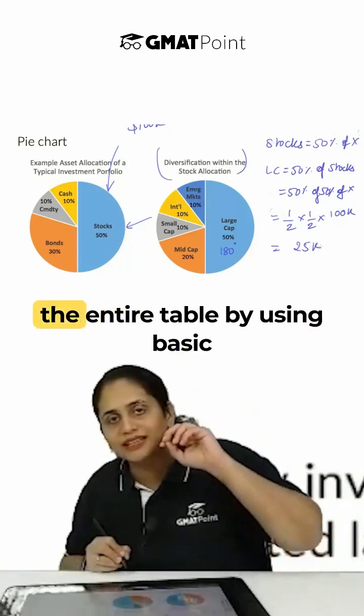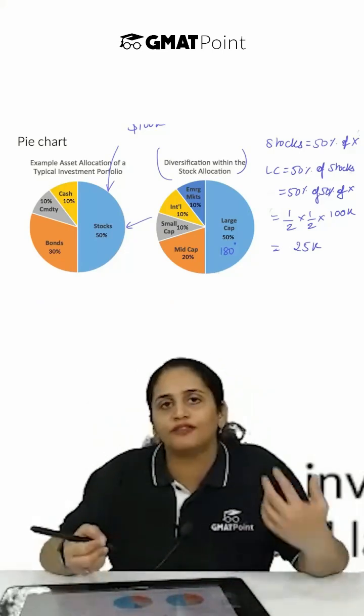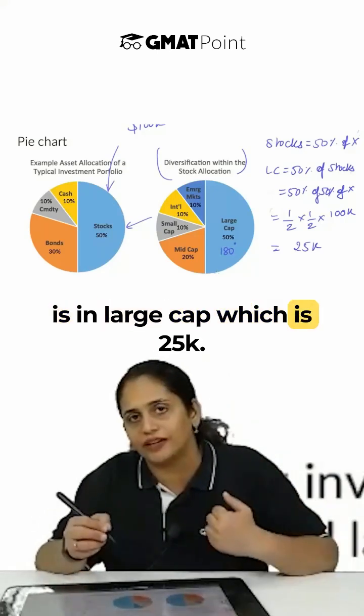Without even actually making the entire table by using basic arithmetic and reading it, this is half, this is half, half of half. Half of half is one-fourth. So one-fourth of the portfolio is in large cap which is 25k.